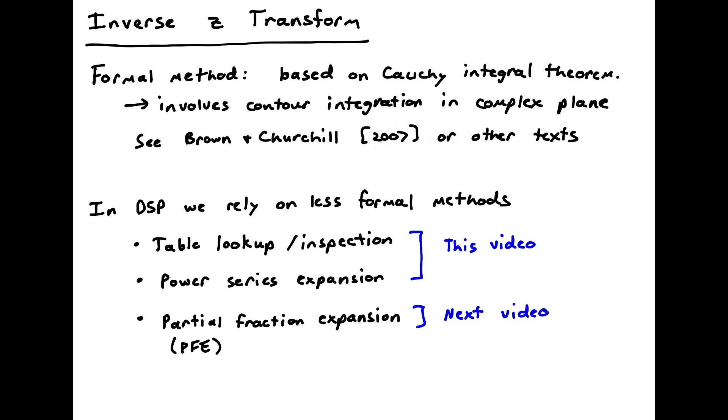In DSP, we're going to rely on less formal methods for doing the inverse Z transform. We'll use the ever popular table lookup or inspection method. That's quite easy to do. And power series expansion. And then partial fraction expansion, which you're probably familiar with from using other transforms such as the Laplace transform.